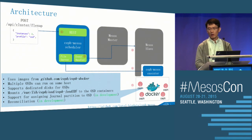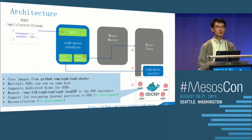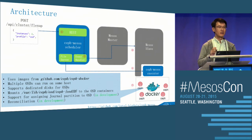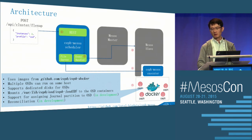Currently we are using the same disks for both the data and the journal, but in the future we are going to allow admins to specify a dedicated journal partition for the OSD. That's reasonable for a typical Ceph deployment because you want to make sure the journal partition has much faster performance than the data disk.